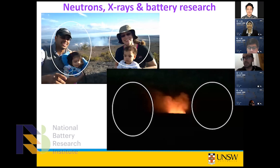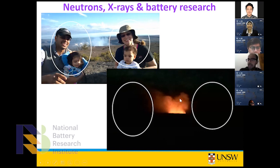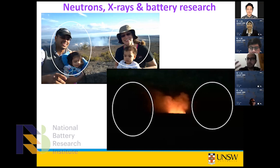I use both neutrons and X-rays in battery research. Here's a picture of my family in Hawaii near a volcano — in the day you can't see the volcano, but at night you can. It's all about contrast. Neutrons give you some contrast, X-rays give you other contrast. X-rays interact with electrons, so heavier elements give a stronger signal. Neutrons have a nuclear interaction that varies across the periodic table, but neutrons are very good for lithium — there aren't many techniques that sensitive to lithium.